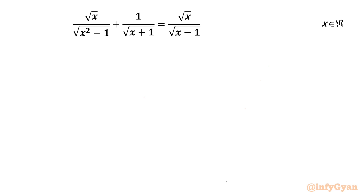Welcome back to Infigyan, my dear friends. In this video we are going to take up one very interesting question from radical rational equations: square root of x over square root of (x squared minus 1), plus 1 over square root of (x plus 1), equals square root of x over square root of (x minus 1). We have to find the real values of x.